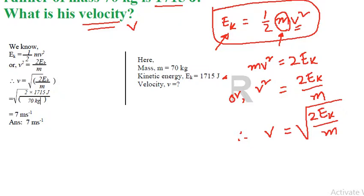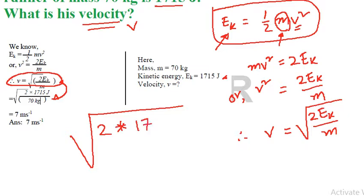You can see the formula here. If we substitute the values, we get v = √(2 × 1715 joules / 70 kg). Now we just solve this equation.